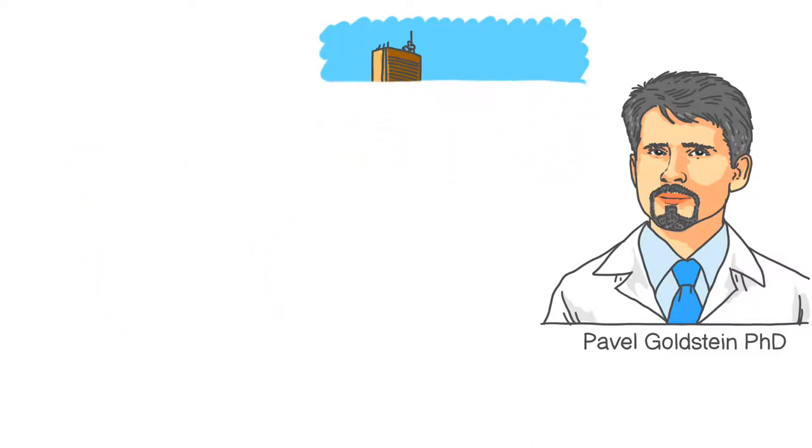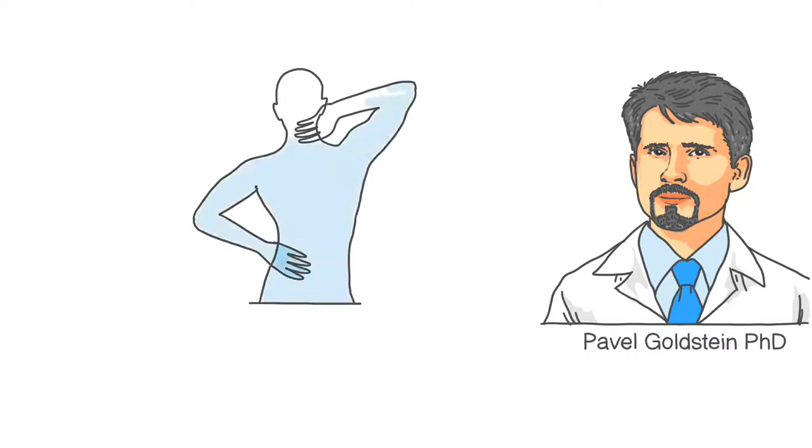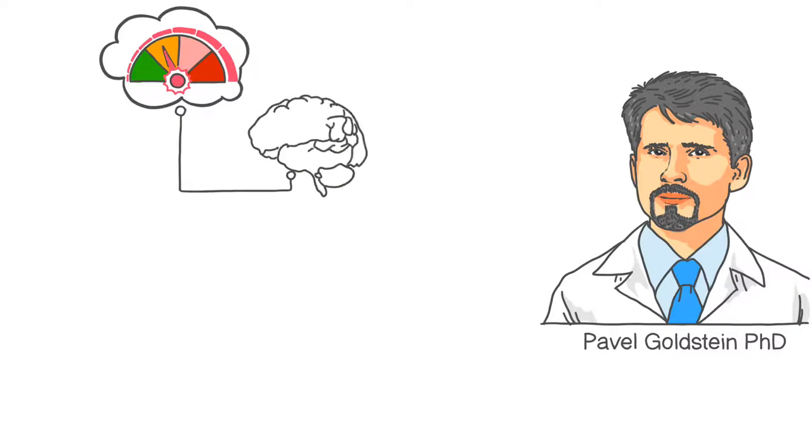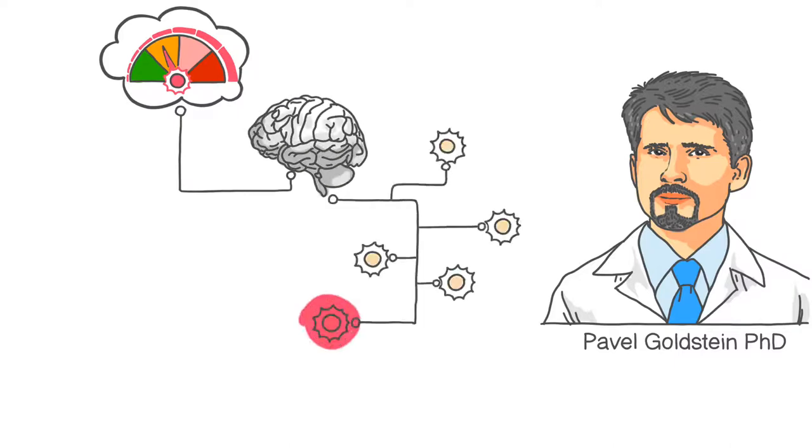It's very important to understand that no matter what hurts in our body, the one who makes the final decision about how much pain we experience is our brain. The brain receives a signal from the body about some problem and alerts us by making us feel a certain level of pain. Thus, pain is like an automatic hazard warning system. But in case of chronic pain, this system often gives a false alarm.